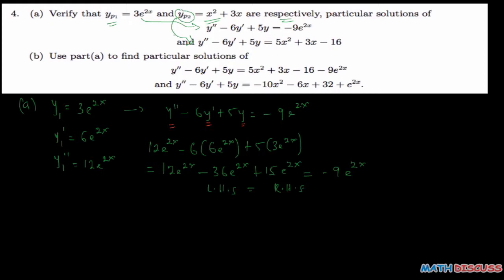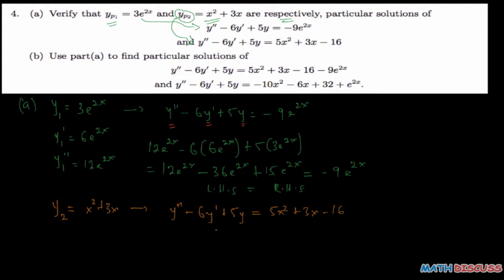Now I want to check or show that yp2 is a solution of the second part. I'm going to call that y2. So y2 equals x squared plus 3x, and I want to show that this is a particular solution of y'' minus 6y' plus 5y equals 5x squared plus 3x minus 16. Similarly, to do this I need to find y prime and y double prime. Since y2 is x squared plus 3x, the derivative of y2 is 2x plus 3, and y2 double prime is 2.